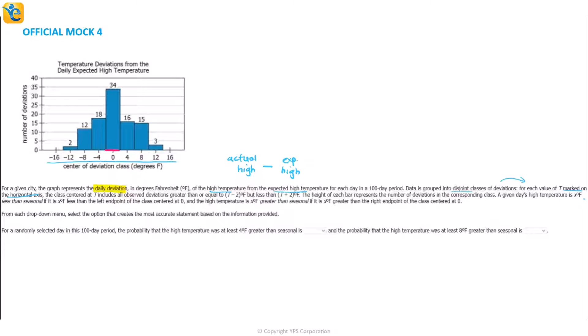Let me just take one example, zero. For each value of t marked, the class centered at t - so the class centered at zero - includes all observed deviations greater than or equal to t minus 2 but less than t plus 2. Which means for zero's case, I'm talking about 0 minus 2 and 0 plus 2. So this class will include all of the deviations that are greater than or equal to negative 2 but strictly less than 2. That actually tells me that all of these intervals have a width of 4. It's always 2 less and 2 more than the value which you see on the x-axis.